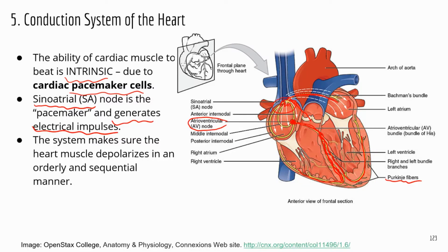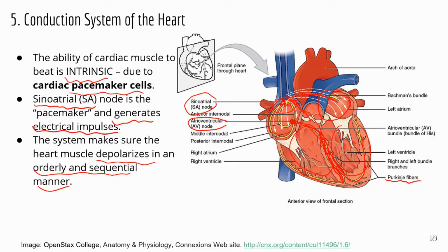As the signal travels down, the heart depolarizes and contracts in an orderly and sequential manner — it starts with the two atria and then the two ventricles. You absolutely have to know the SA node, the sinoatrial node, because that's where the pacemaker cells are located — the node that generates the electrical impulses and defines the rhythm of the heartbeat.